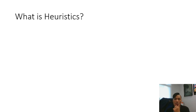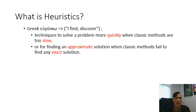What is heuristics? Heuristics comes from the Greek word meaning I find and discover. It is a technique to solve problems more quickly when classic methods are slow. When I say classic methods here, I'm talking about regression analytics, regression analysis, or classic statistical methods.